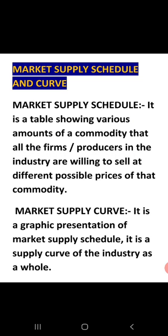When different producers sell a commodity at different possible prices, that is the market supply schedule. And when you give a graphical representation of that schedule, it is called the market supply curve.